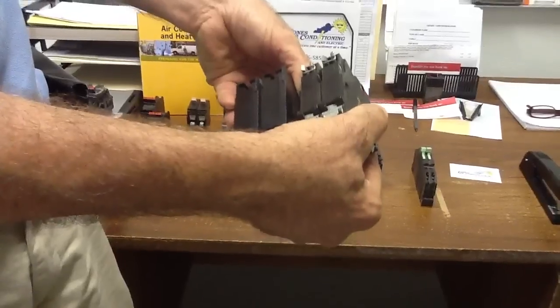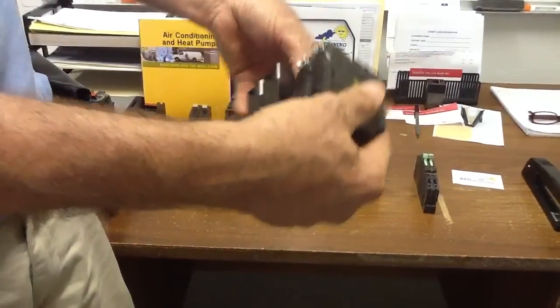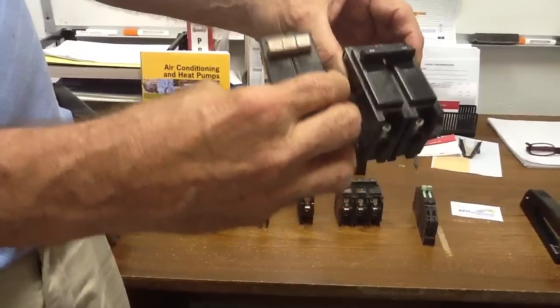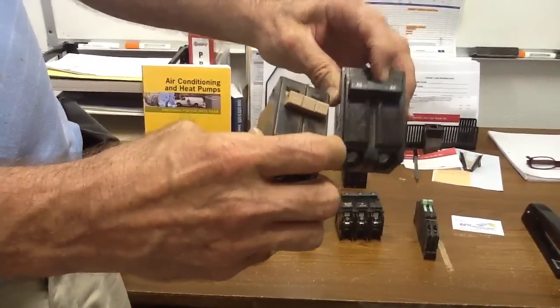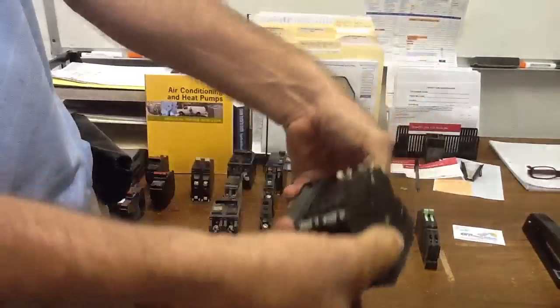So when your technicians go out in the field, or your electricians go out in the field, you want to say, I have a Cutler Hammer. You ask the question, is it a tan, or is it a black handle one? And that way you'll know which breakers to buy.